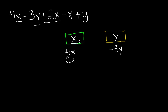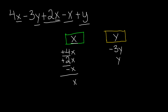We have plus 2x, so I'll write 2x in the x category. Then we have minus x — x is the variable here — so I'll write negative x. And then positive y goes into the y category. Now we solve the x category: we have positive 4x, positive 2x, and negative x. Positive 4 plus positive 2 minus 1 gives us 5, so the result is 5x.